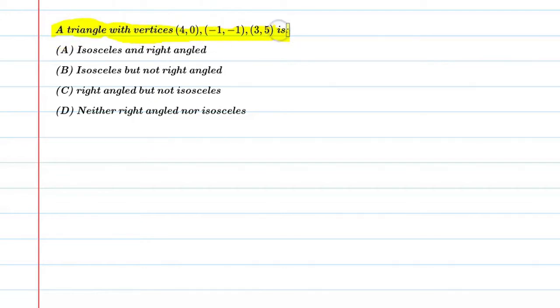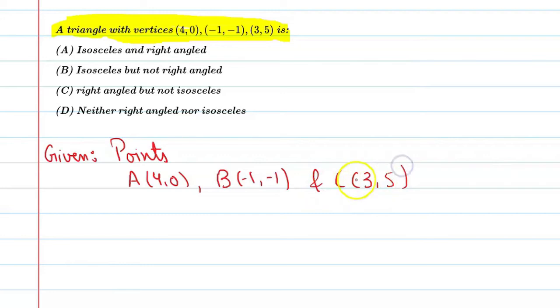The question asks what type of triangle is formed by these vertices. We need to find this. Let's start by writing the given points: A(4,0), B(-1,-1), and C(3,5). Let's start the solution.